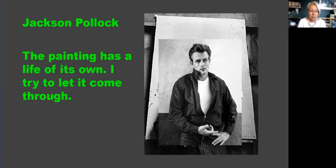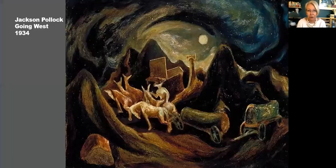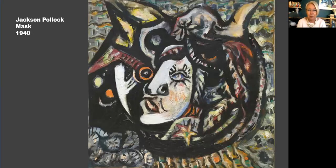Pollock did not burst onto the scene as an abstract provocateur. He had training and inspiration from early century artists, but he had demons — he had lost part of a finger in a childhood accident involving an axe, his drawing was always kind of clumsy, he suffered from alcoholism and was even hospitalized for it in the 1930s, and it led to his death in a car crash in 1956. He underwent Jungian analysis in the early 40s, which certainly enriched his work. His splatter paintings, for which a wit at Life magazine named him 'Jack the Dripper,' happened in a fabulous rush between 1947 and 1950. But prior to that, his work had been figurative, symbolic, and mythological.